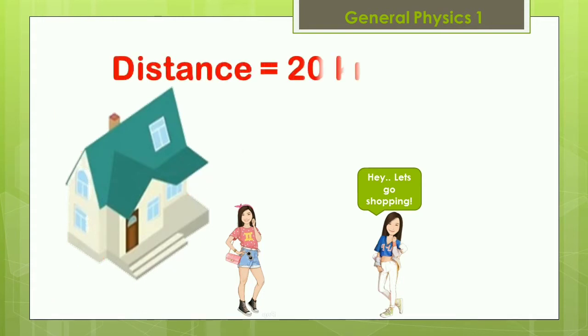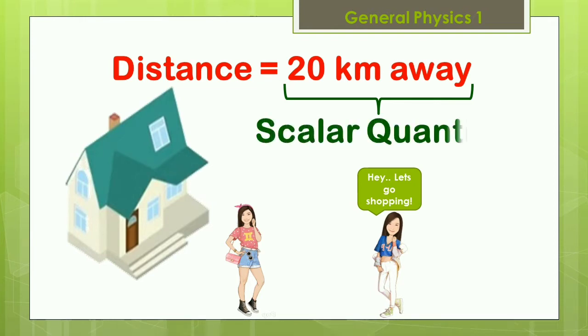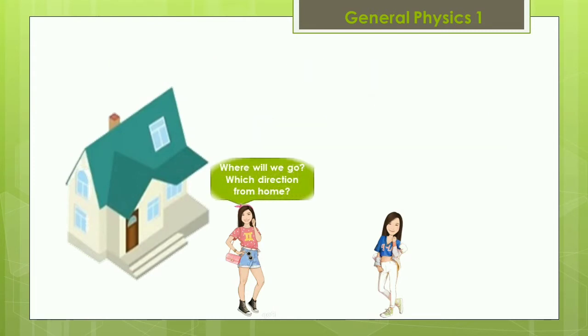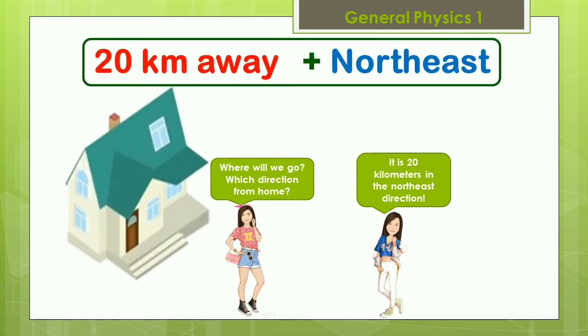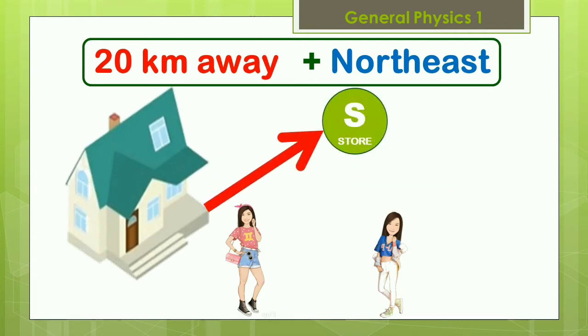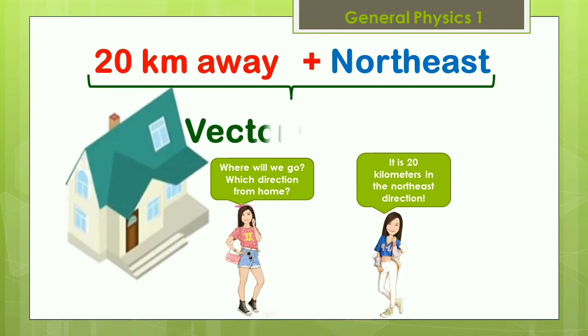It is hard to know where exactly it is. You are only provided the distance which is one-dimensional information. One-dimensional information like this is called a scalar quantity. Your question to her would probably be, which direction from home. And then when you are told that is 20 km northeast direction, you have the precise information. This now becomes a two-dimensional information. The store is over there. Two-dimensional information like this is called a vector quantity.